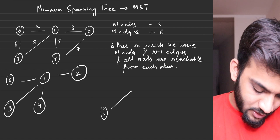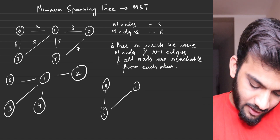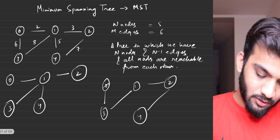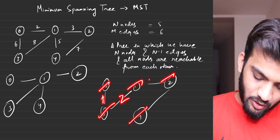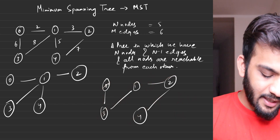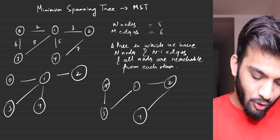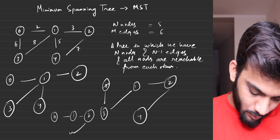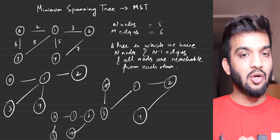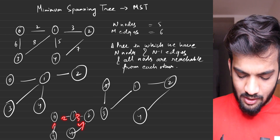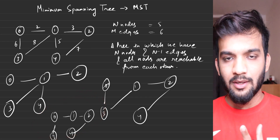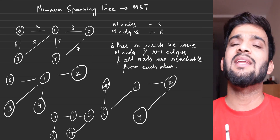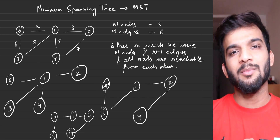You can draw more spanning trees from the same graph. For instance, take nodes 3, 1, 0, 2, 4 — five nodes, four edges, all connected. Or take 0, 1, 2, 4, 3 — again five nodes, four edges. There is no restriction on the number of spanning trees; a graph can have one, two, three, or many spanning trees depending on its structure.